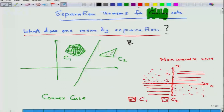In R², which is our playground, I have a convex set C₁, another convex set C₂, and they are disjoint. Then I can draw a line separating these two. This line, which is a hyperplane in R², divides the whole space into two parts: C₁ lies in one half-space and C₂ lies in the other half-space. That is exactly what is meant by separation.